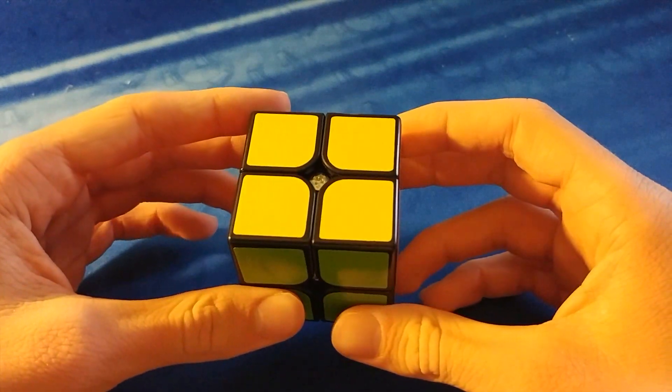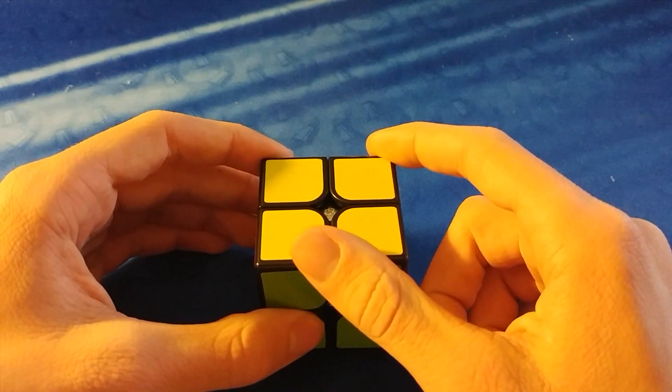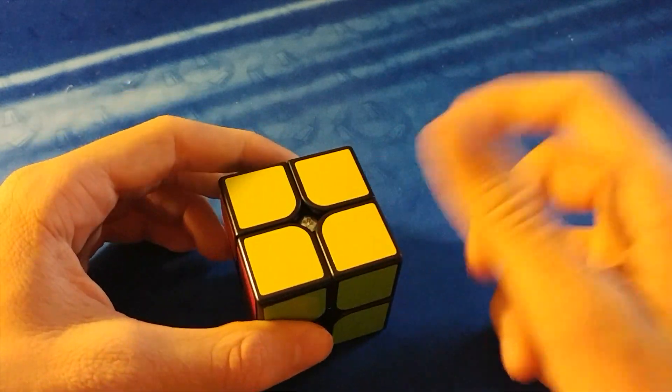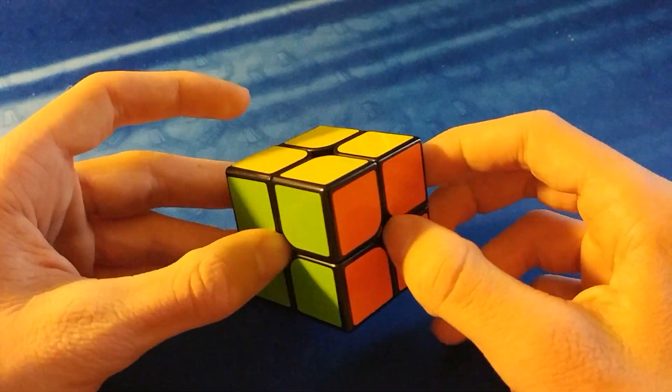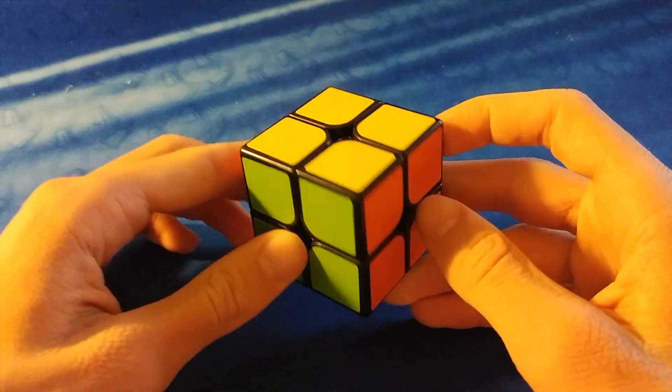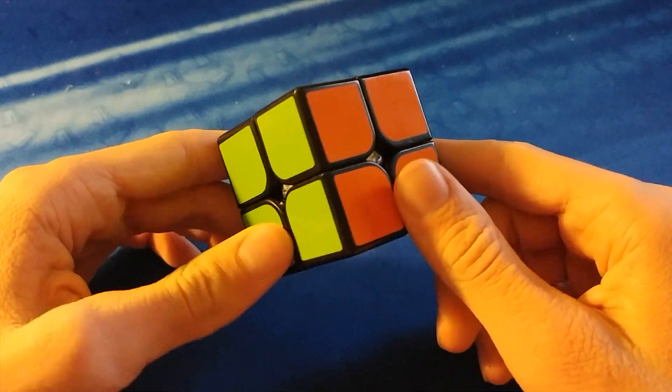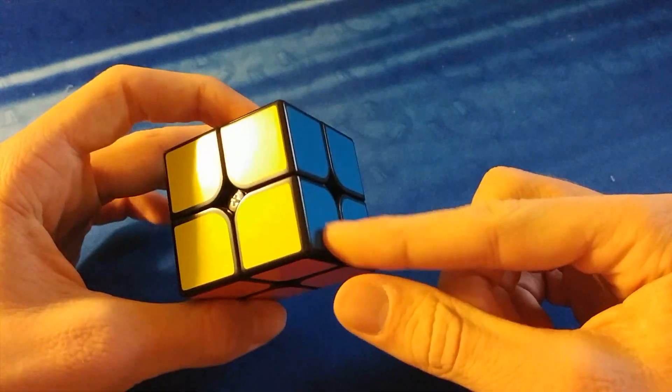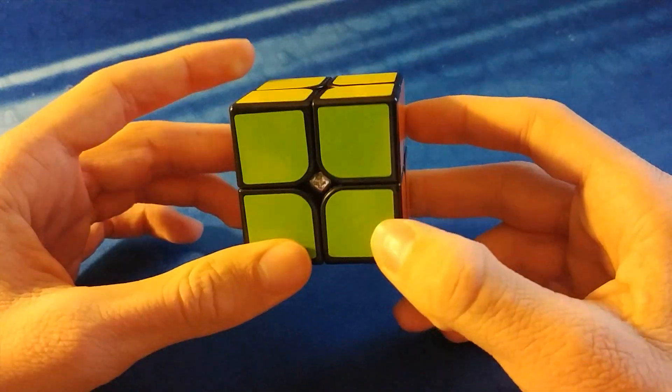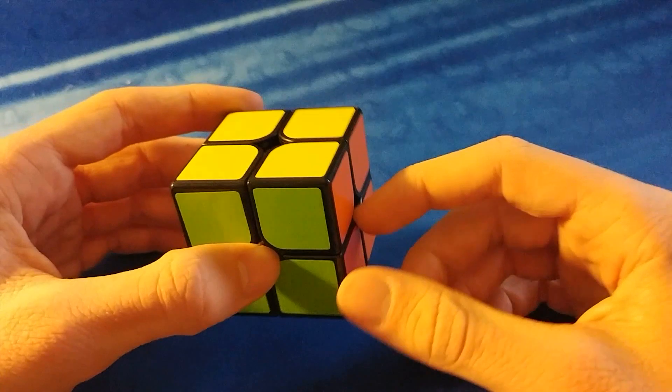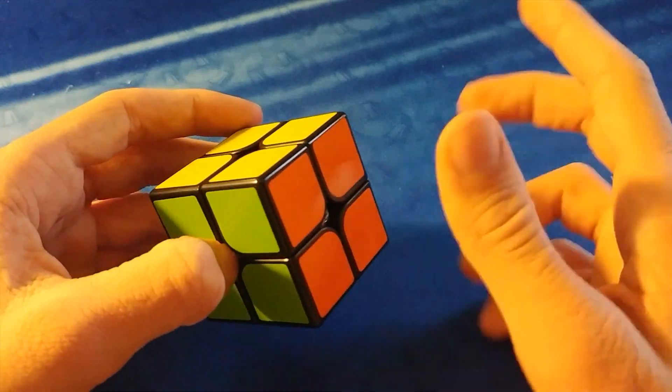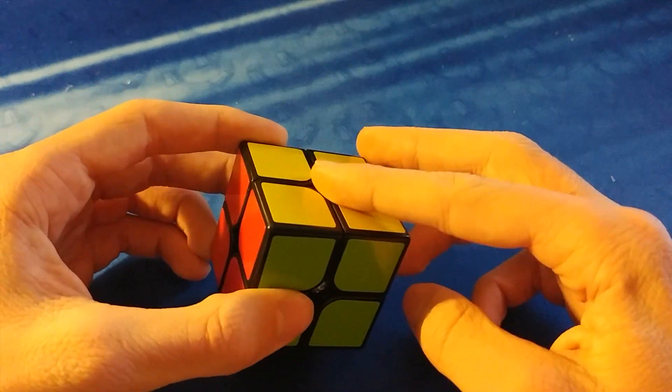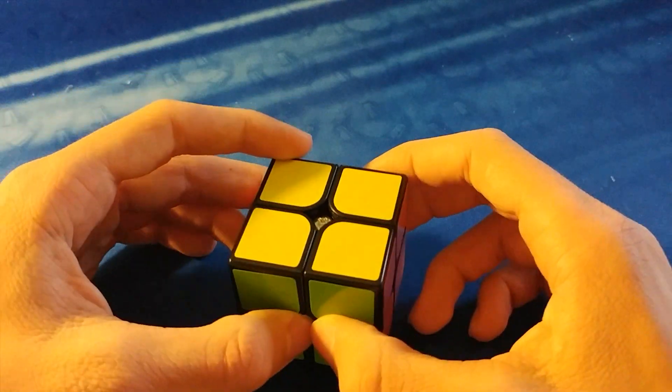Another thing would be to get down your OLL cases as fast as possible and get the most efficient ones, and then also you want to work on PBL recognition, because that can be really difficult, because you can have pairs in the back and pairs on the side. So if you're finding that you're not getting the times you want, you should work on being color neutral, having efficient OLLs, and getting good PBL recognition.